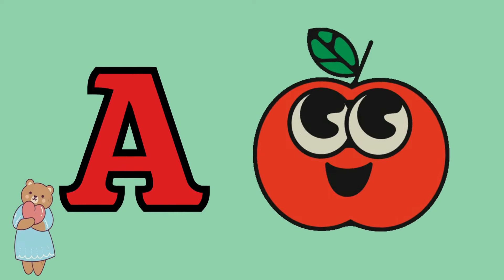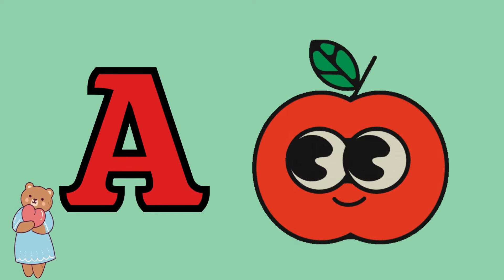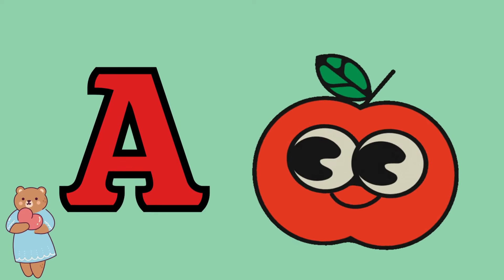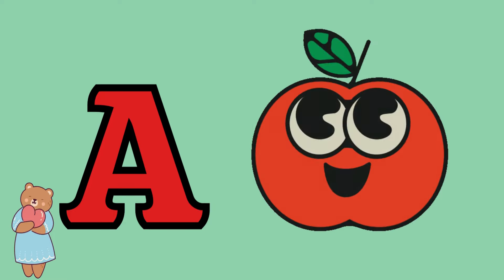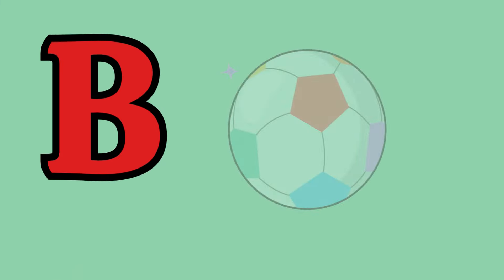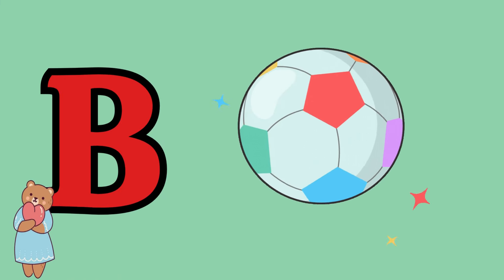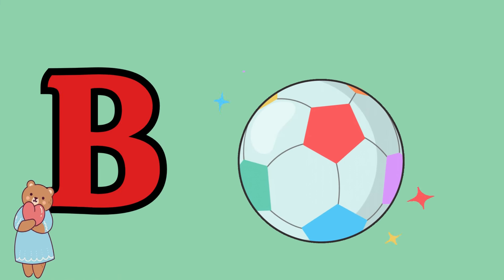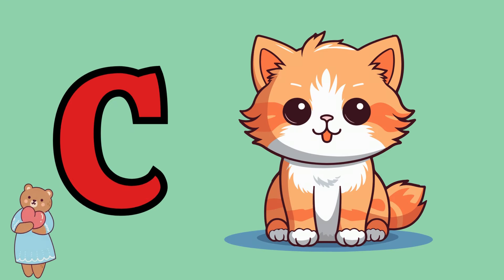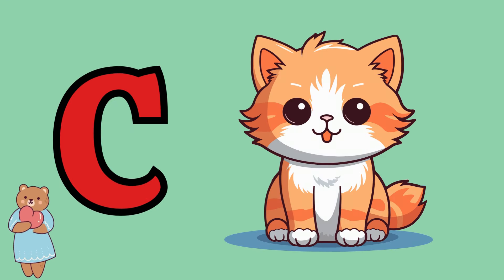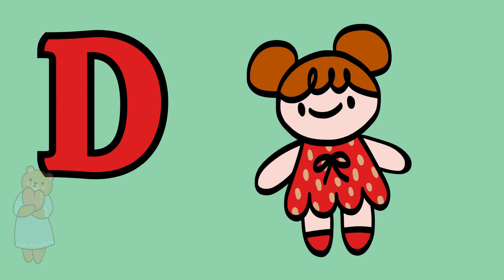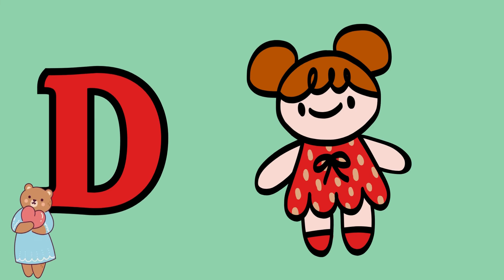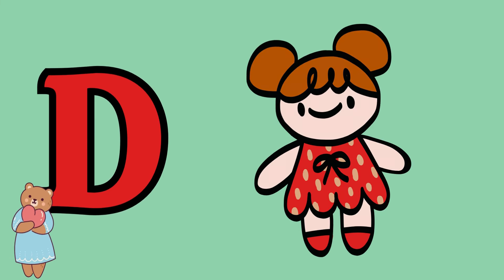A is for apple, a-a-apple. B is for ball, b-b-ball. C is for cat, c-c-cat. D is for doll, d-d-doll.